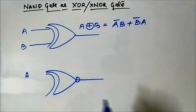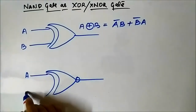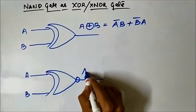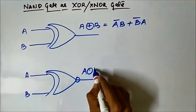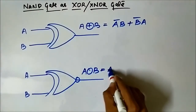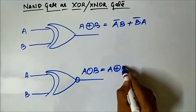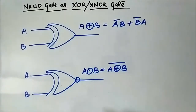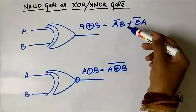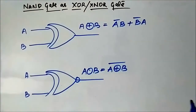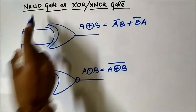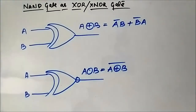Just an extra bubble is added. This is XNOR, which is simply the complement of XOR. If we complement it we will get the XNOR expression. So we have to get these two outputs using NAND gate. Let us see how we can do that.